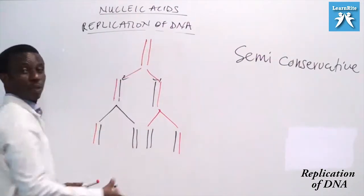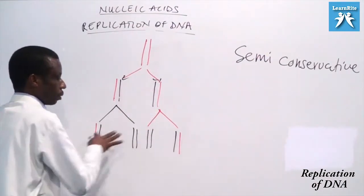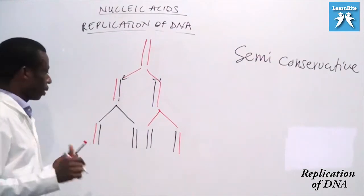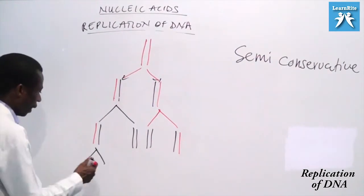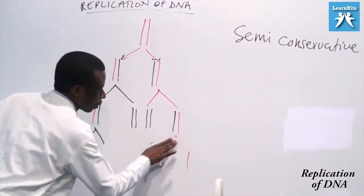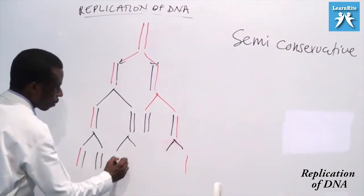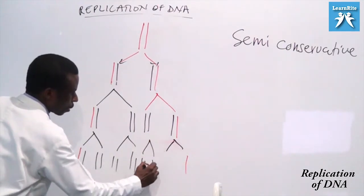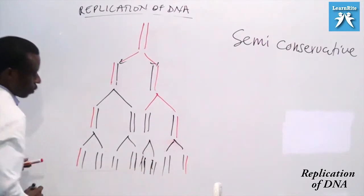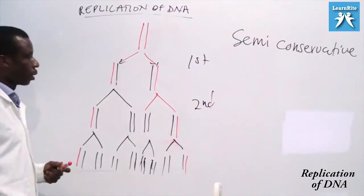Realize that even after a hundred replications, we only have two strands that have the original template. This is the first replication. This is the second replication. This is the third replication.